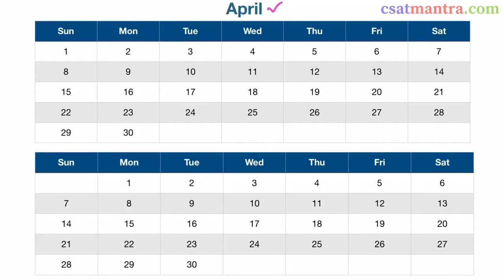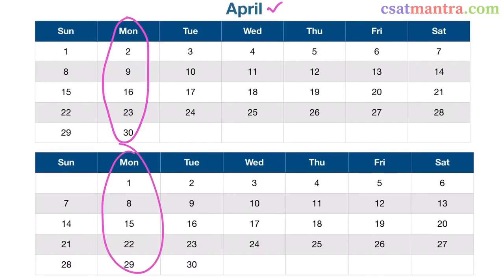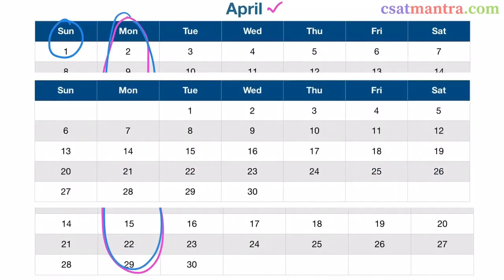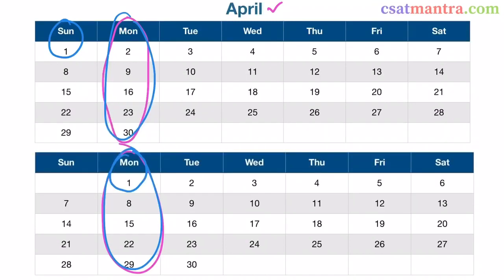April has 30 days. To have 5 Mondays in April, the month should start either on Sunday or on Monday. Only then will we have 5 Mondays. If it starts on Tuesday, we will have only 4 Mondays. This is the same with every other day. So to have 5 Mondays, the month must start on either Sunday or Monday.